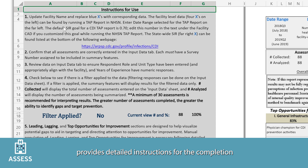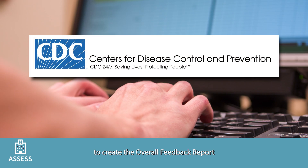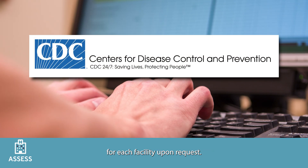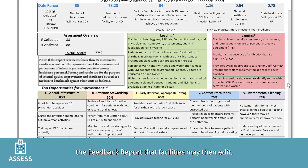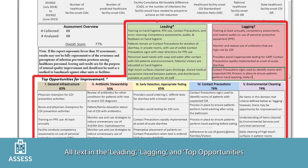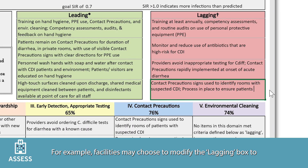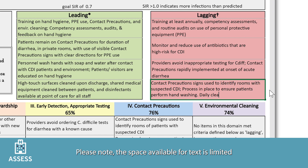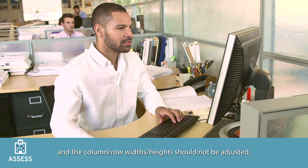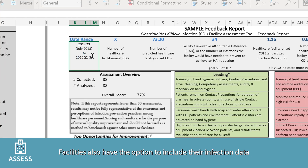The left side of the feedback report Excel sheet provides detailed instructions for the completion of the feedback report. CDC is able to complete these steps to create the overall feedback report for each facility upon request. The right side of the sheet displays the feedback report that facilities may then edit. All text in the leading, lagging, and top opportunities for improvement sections may be customized by the facility. For example, facilities may choose to modify the lagging box to better represent their priority items and add additional information.